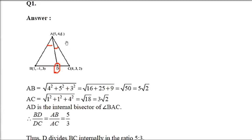We know the coordinates, so AB, AC, and BC we can find out. AB will be root of: phi minus 1 is 4 squared, 4 minus minus 1 means 5, and 6 minus 3 is 3. So under root, square and add.